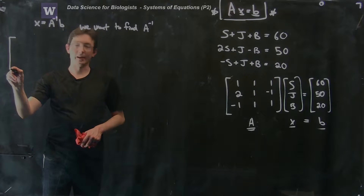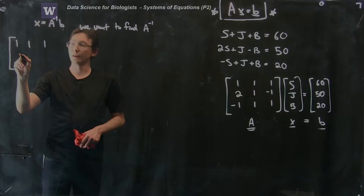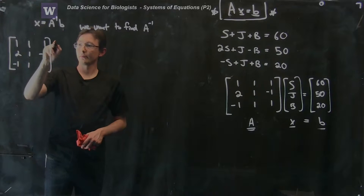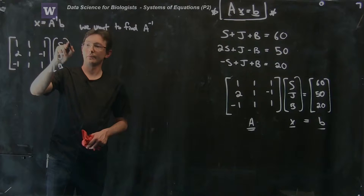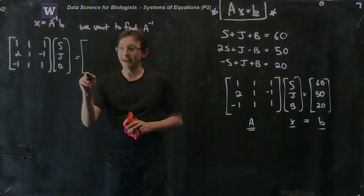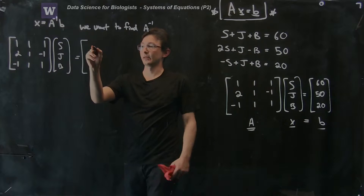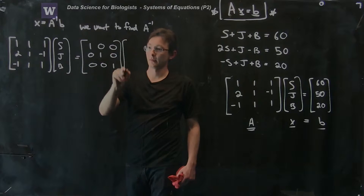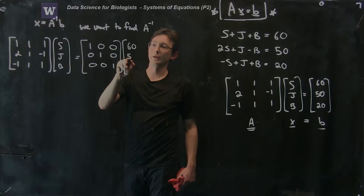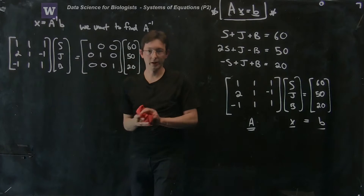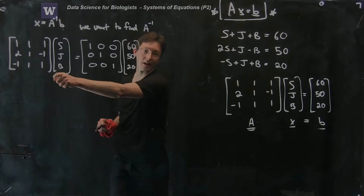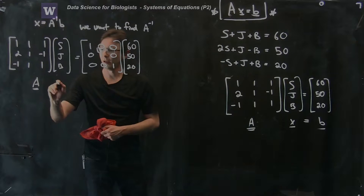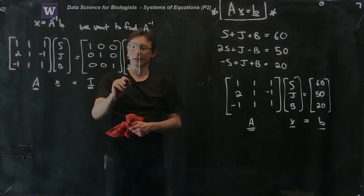What I really want to do is write my A matrix — 1, 1, 1; 2, 1, minus 1; minus 1, 1, 1 — times Sally, John, and Bob, and set this equal to the identity matrix times my B vector. So I have A times X equals identity times B. It'll become clear why we're doing this in a minute.